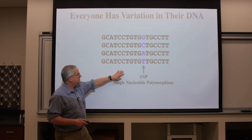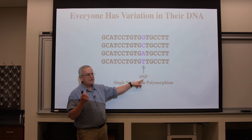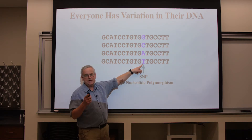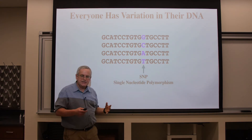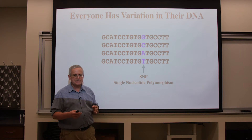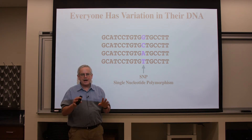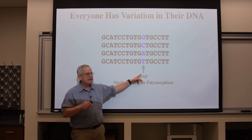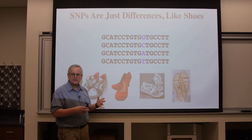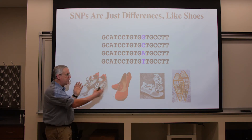We have something called a SNP — a single nucleotide polymorphism — but it's just pronounced SNP. What that really means is that at any given position, it could be any of the four bases: G, C, A, or T. Those SNPs are just differences. If you look at any two humans, they're 99.9% identical, so these SNPs are rare — a very small percentage distinguishes any one of us. Those different bases are different just the way four different shoes are different; it's not that one's better than another.